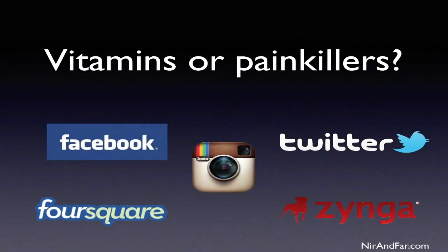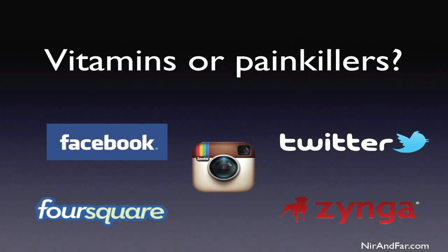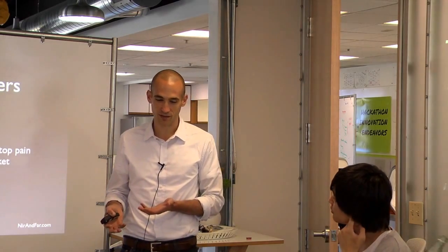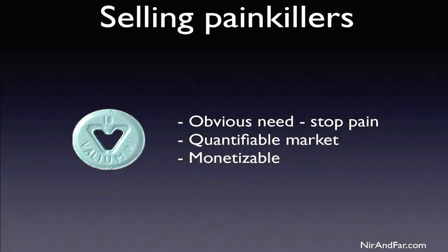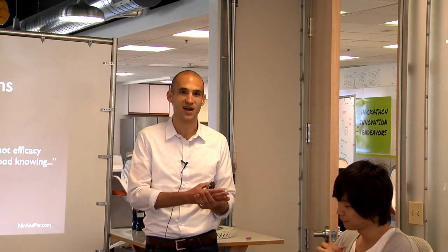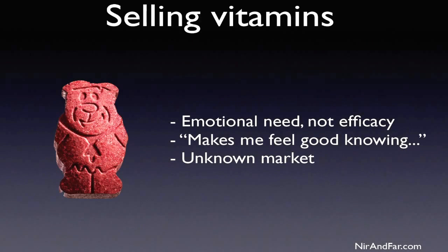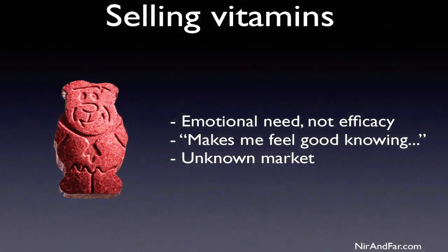That's what I really wanted to study. A question that comes up a lot in lean product design is: are you building a product that's a vitamin or a painkiller? Generally entrepreneurs and investors want to build companies that are selling painkillers, because painkillers have an obvious need — stop the pain. It's a quantifiable market, easy to monetize. Vitamins are different — they're about selling an emotional need. You don't really know if the vitamin is doing its job. With vitamins it's more of an emotional need: it makes me feel better.